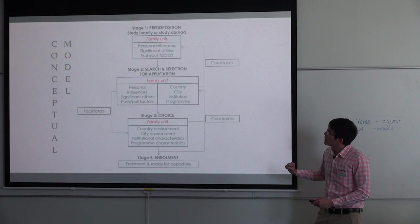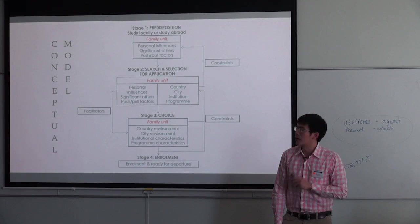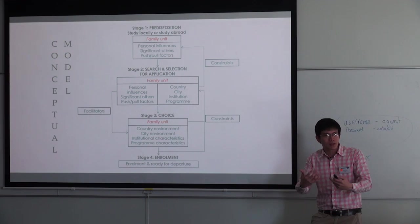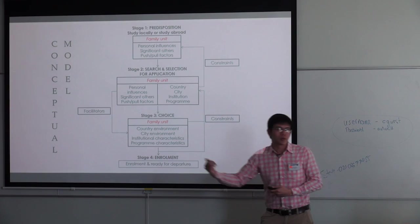Based on those questions and that understanding, this is my conceptual model. It still has stages one, two, three, and four, but the family here is the key decision-making unit. You go through different stages with different factors, but there are loops showing constraints or facilitating effects — where one thing may stop you from doing something, or one factor can enhance your chances of going to a certain country or destination.